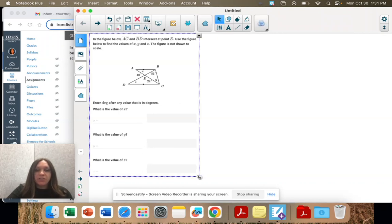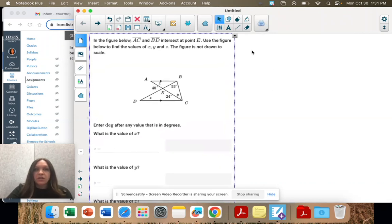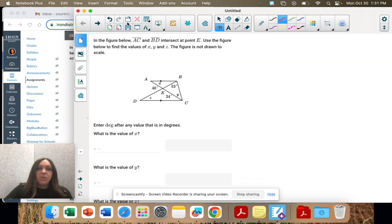Okay, so some of this information is good to know. AC is a line segment from A to C, this line, and then B to D, that line intersect at point E. And we know from these little markings that these are parallel lines. So that means we're probably going to have to use some of our properties from the previous section.